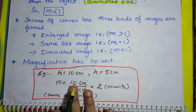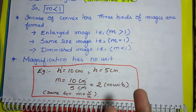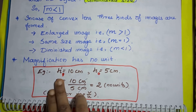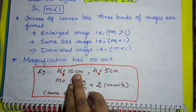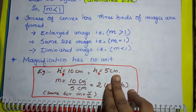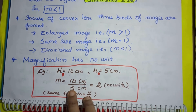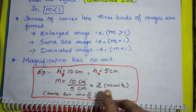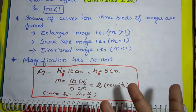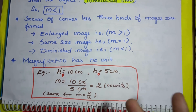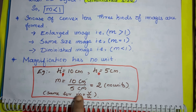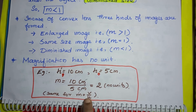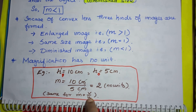An important point to remember: magnification has no unit. For example, if H1 = 10 cm and H0 = 5 cm, then M = 10 cm / 5 cm — the units cancel out. Similarly, when magnification is expressed as image distance over object distance, the units cancel out there as well. So magnification has no units.